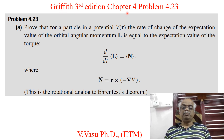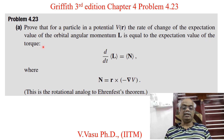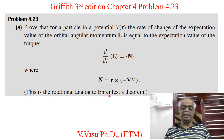Today we will solve problem 4.23 of Griffiths 3rd edition, Introduction to Quantum Mechanics, Chapter 4. The problem consists of two parts. Part 1 is to prove that for a particle in a potential V(r), the rate of change of the expectation value of angular momentum L equals the expectation value of the torque N, where N = r × (−∇V). This is the rotational analog of the Ehrenfest theorem.